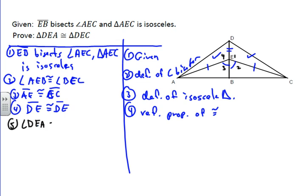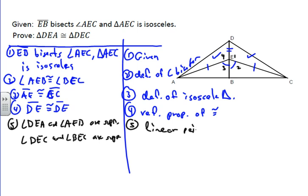angle DEA and angle AEB are supplementary, and angle DEC and angle BEC are supplementary. Those are both supplementary because of linear pairs being supplementary.